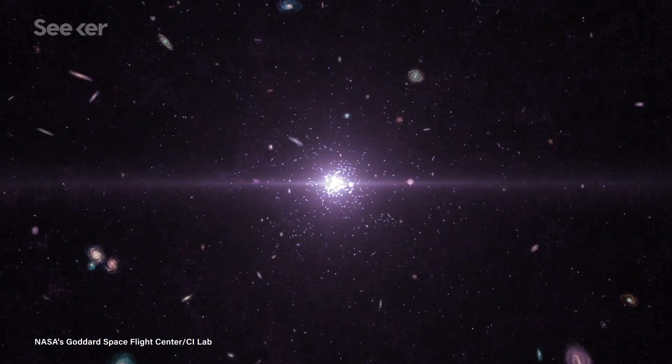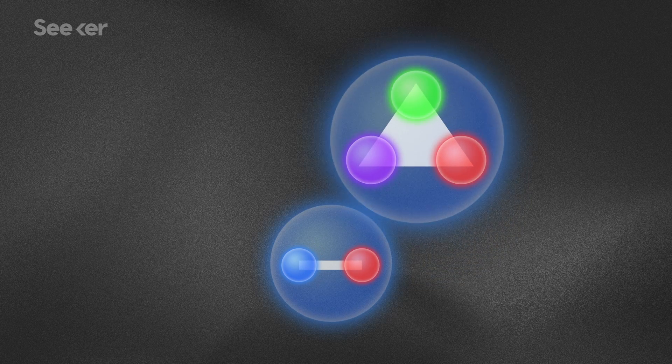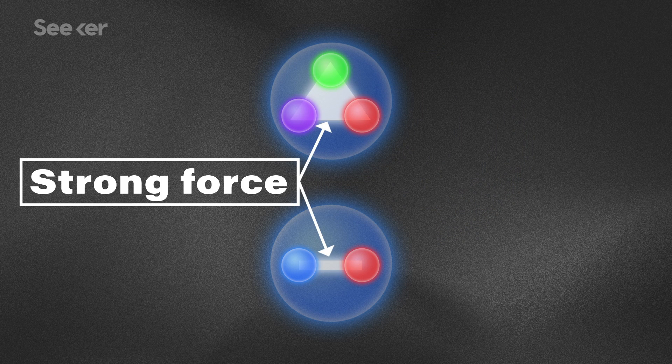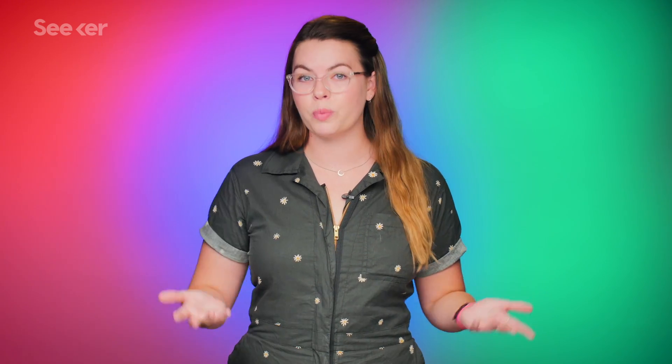So states of matter like this require some pretty extreme conditions to exist. See, we know that quarks are held together by the strong nuclear force, also known as just the strong force. And QCD is the theory that describes how the strong force works on these fundamental particles. But the theory is so complicated that we can't actually use the math to predict how this matter will behave at extreme temperatures and densities.